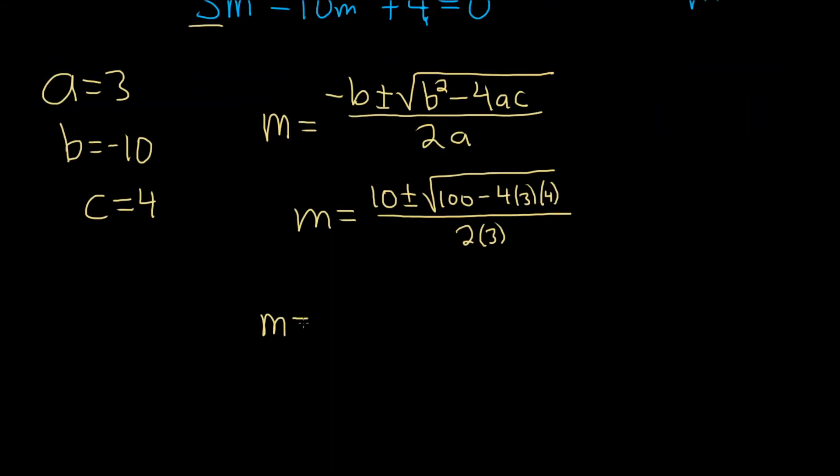So it's negative 10, plus or minus the square root of, let's see, 100, 12 times 4 is 48, all over 6. So this is equal to 10, plus or minus the square root of, 100 minus 48 is 52, and it's all over 6.